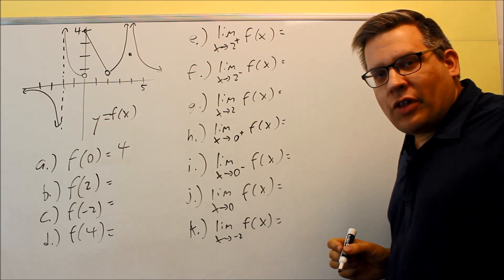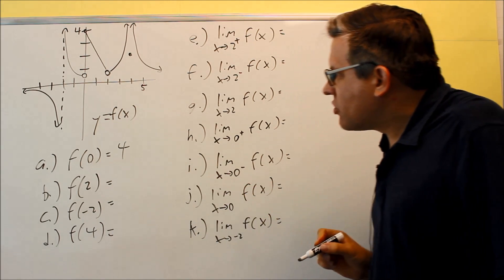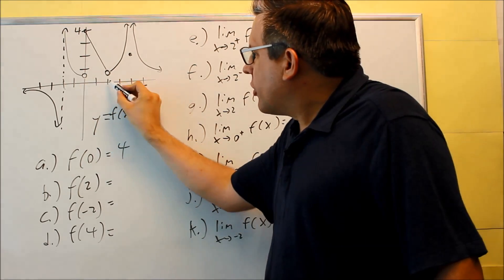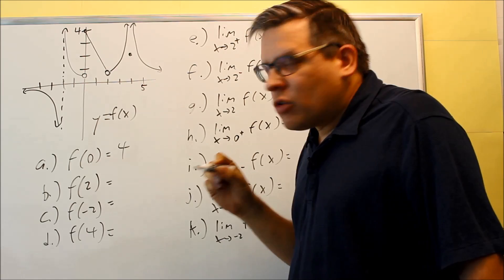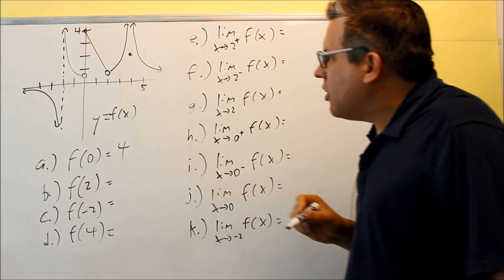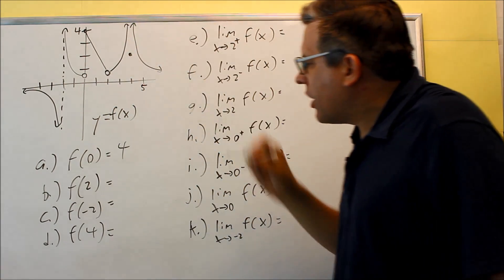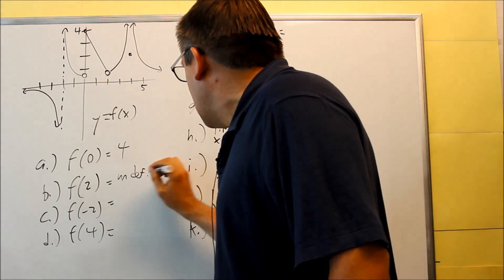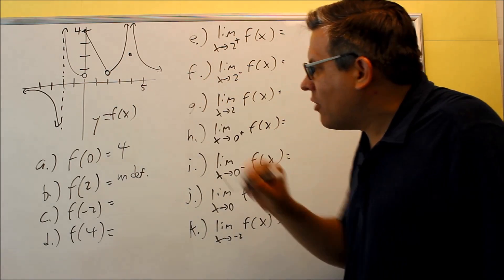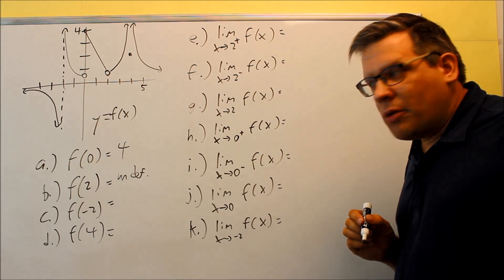f(2) is the y value when x is two. When I go over to two, I notice there is no closed circle. If there's no closed circle anywhere along that, it's only open, that means this is going to be undefined. Undefined means we're not going to have an answer at that particular one.